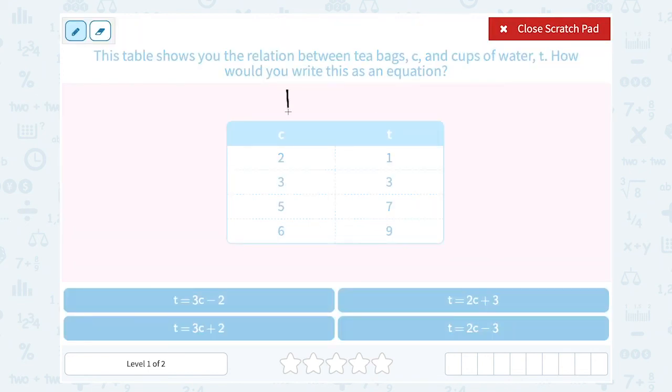If I look at my C column, I notice that each number is going up by 1, right? From 2 to 3 is an increase of 1. It looks like they maybe would have skipped the value of 4. So 3 to 4, 4 to 5, and 5 to 6.